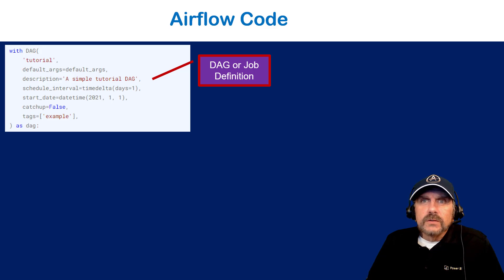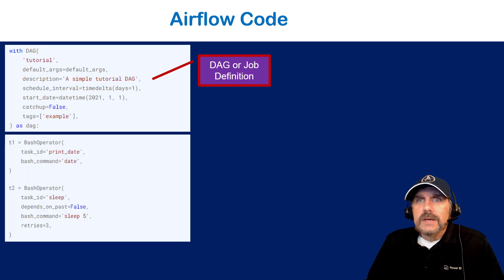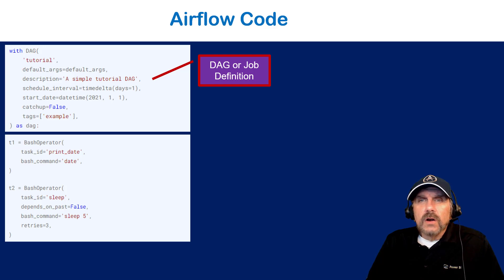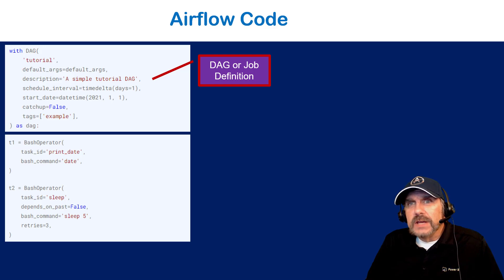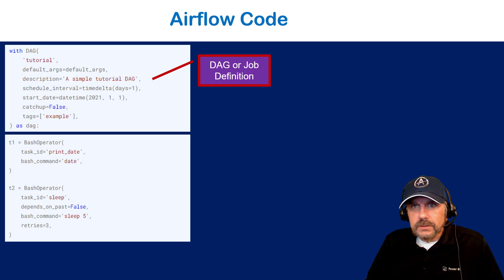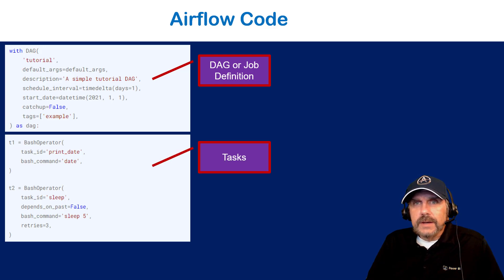Now we create a simple job with two tasks, T1 and T2, using a bash operator. Operators in Airflow are types of tasks you can do — the bash operator executes bash commands, the Python operator executes Python. T1 has a task ID of 'print_date' and its bash command executes 'date.' T2 has a task ID of 'sleep,' a depends-on-past parameter, bash command 'sleep 5,' and retries set to three. To define dependencies, we use the shift operator: T1 >> T2, meaning T1 runs first, then T2.